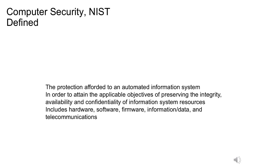So taking a look in reverse order, the scope of computer security is the OSI protocol stack that starts with applications on the top, moves down to the presentation and the session, down through the transport layers, down into the physical layers. All of those are within scope of computer security. And you'll notice that it says the protection provided to an automated information system — so this is protection for not only the platforms and the host software, but the information that these systems are processing.